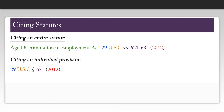Now that we've found all the elements we need, we can create our citation by plugging each of those elements into the format we laid out earlier. Note that the difference between citing an entire statute and citing an individual provision is that when you cite an individual provision, you do not include the official name of the act, and you only include the specific section that you're citing rather than the span of sections.